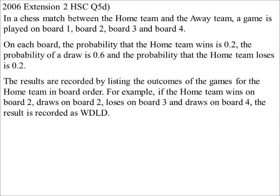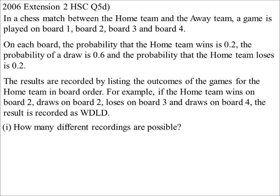Okay, so that was quite a clever way of doing it. All right, 2006 one. In a chess match between the home team and the away team, the game is played on four different boards which we conveniently call board one, two, three, and four. On each board the probability of the home team wins is 0.2, a draw is 0.6, and the home team loses or in other words the away team wins is 0.2. So they're equally likely to win. The results are recorded by listing the outcomes of the games for the home team in board order. So the example they've given is if we win on board one, draw on board two, lose on board three, draw on board four, then it would look like WDLD.